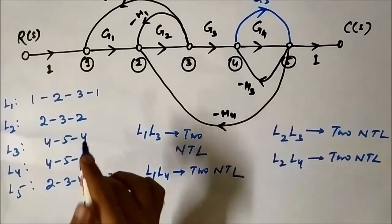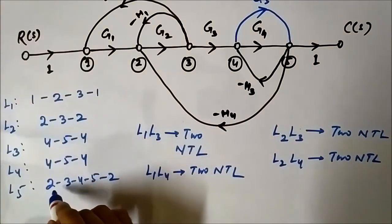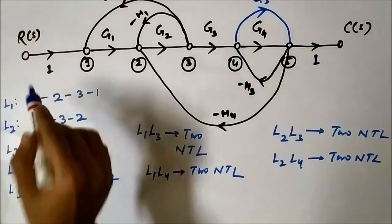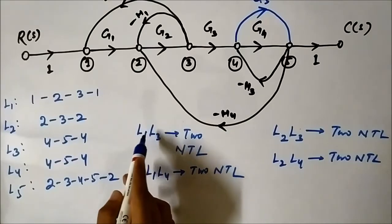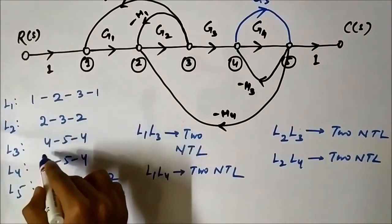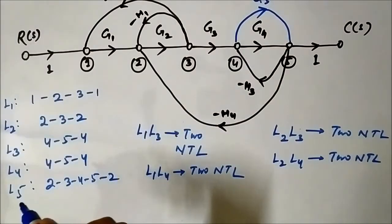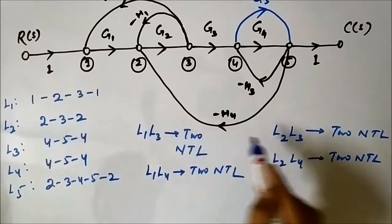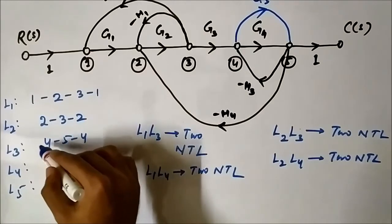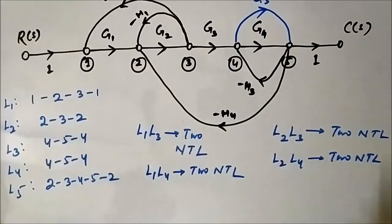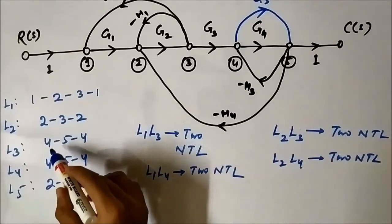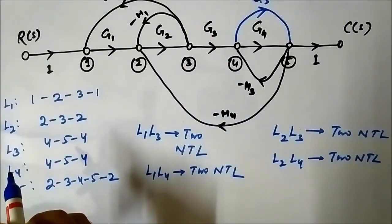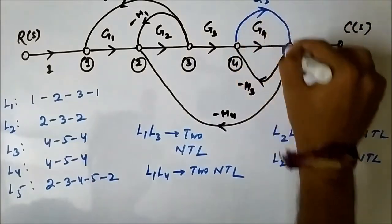Comparing L2 (2,3,2) with L5 (2,3,4,5,2): nodes 2 and 3 are common, so L2 and L5 are touching. There is no need to compare L3 with L1 or L2 again as those are already established. L3 and L4 have the same nodal representation, so they are touching.